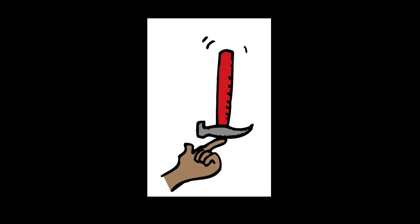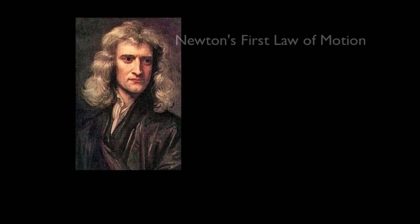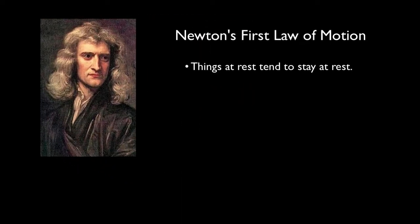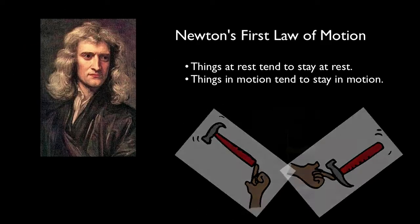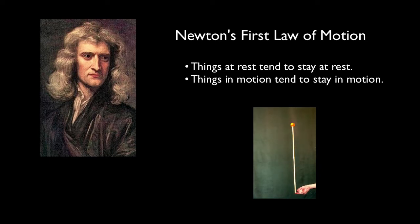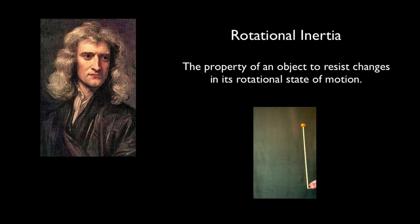We talked about inertia earlier with Newton's first law of motion. Things at rest tend to stay at rest. Things in motion tend to stay in motion. Here, however, we'll be looking at cases where the potential motion is rotational. We call this sort of inertia rotational inertia.